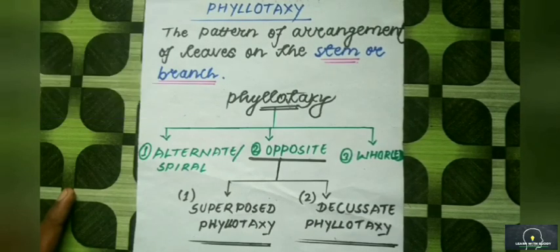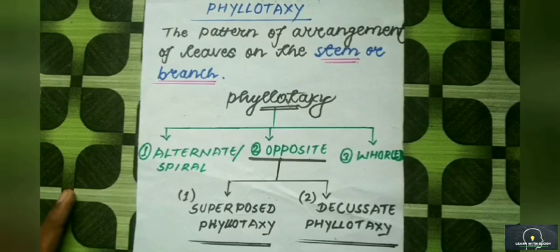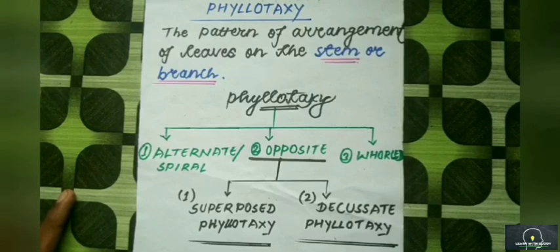Generally, we learn three types of phyllotaxy: spiral or alternate phyllotaxy, opposite phyllotaxy, and whorled phyllotaxy. Further, opposite phyllotaxy is subdivided into superposed phyllotaxy and decussate phyllotaxy.